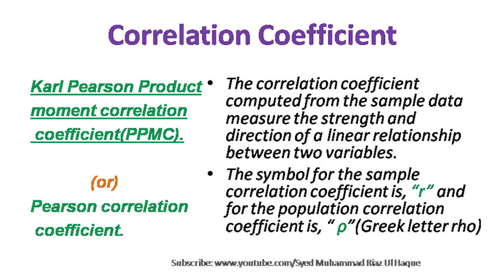After the scatter plot concept, we talk about correlation coefficients. We will discuss the Carl Pearson product-moment correlation coefficient, also called the Pearson correlation coefficient. The correlation coefficient computed from sample data measures the strength and direction of a linear relationship between two variables. The symbol for the sample correlation coefficient is small r, and for the population correlation coefficient it is the Greek letter rho (ρ).